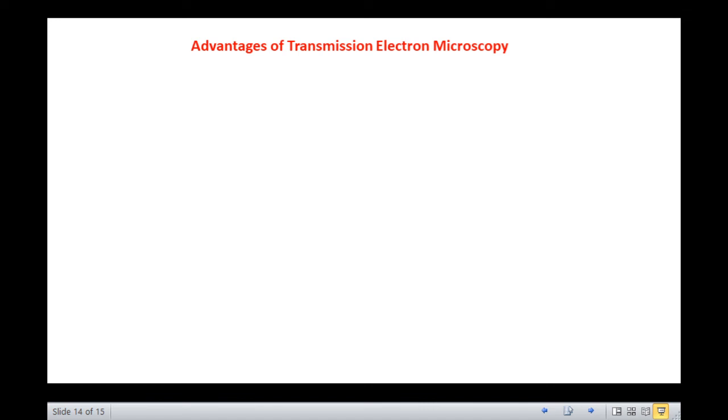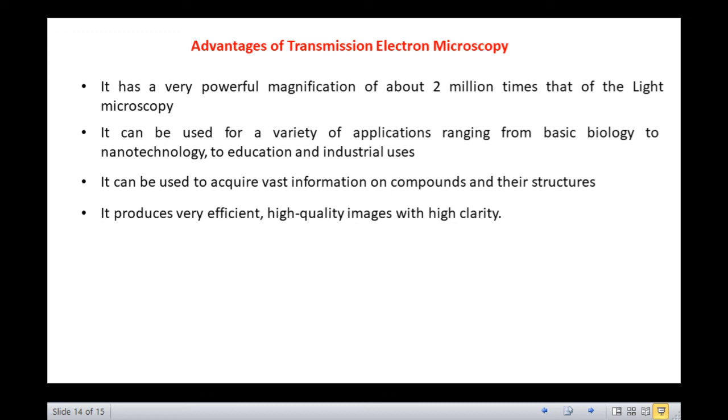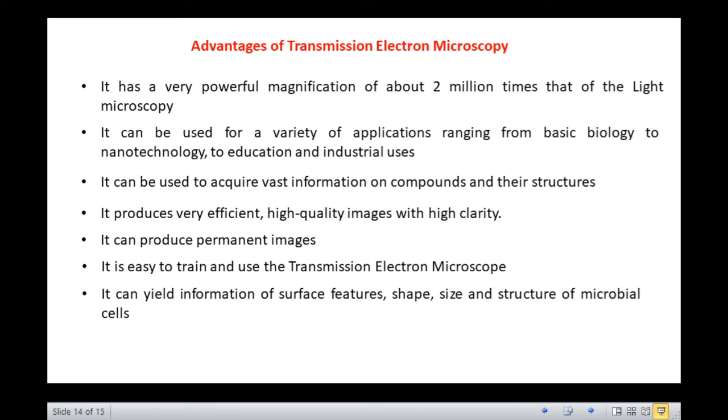Let us now talk about the advantages of transmission electron microscope. It has a very powerful magnification of about 2 million times than that of a light microscope. It can be used for a variety of applications ranging from basic biology to nanotechnology to education and industrial uses. It can be used to acquire vast information on compounds and their structures. It produces very efficient high-quality images with high clarity. It can produce permanent images. It is easy to train and use the transmission electron microscope.